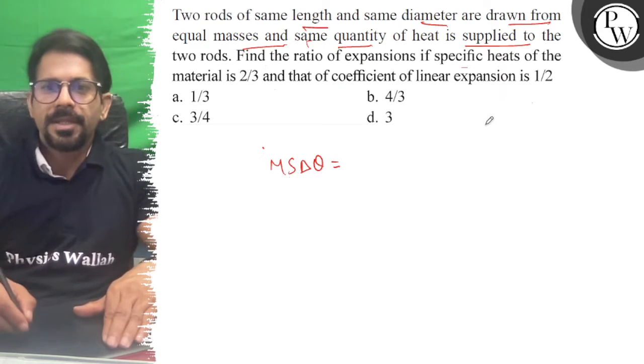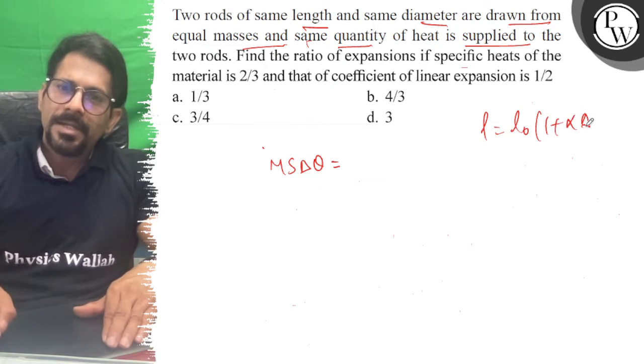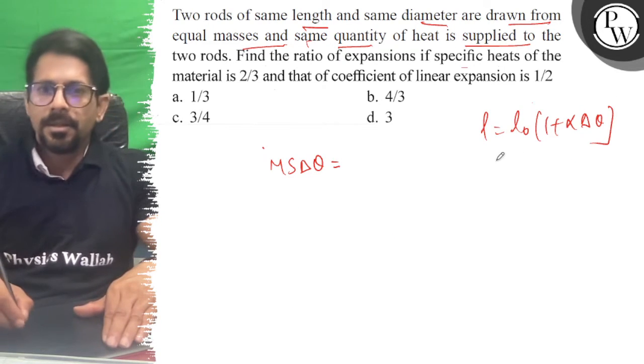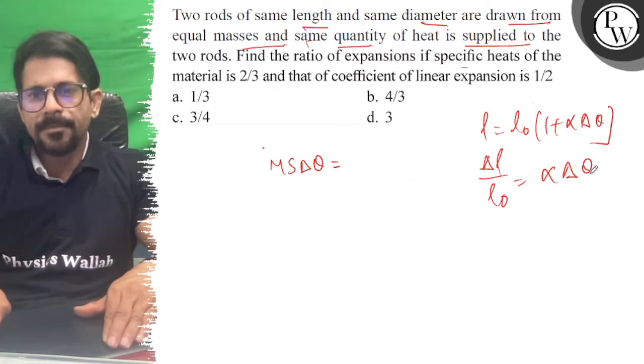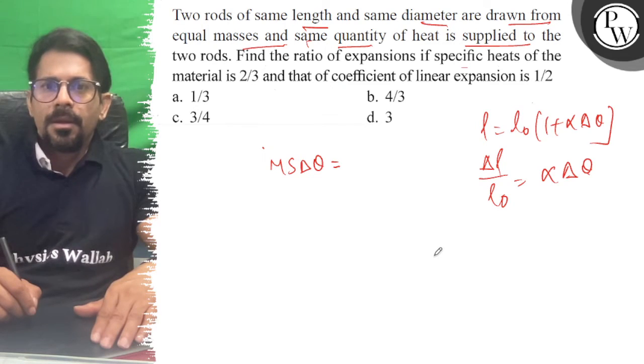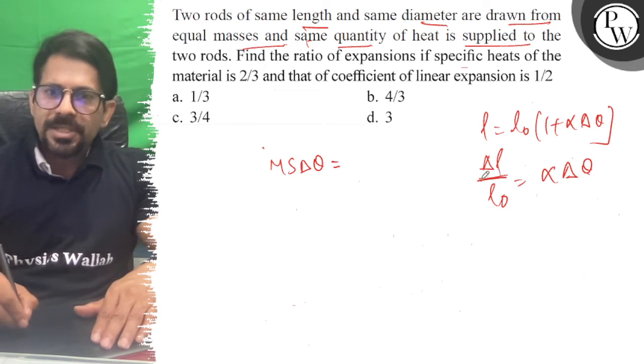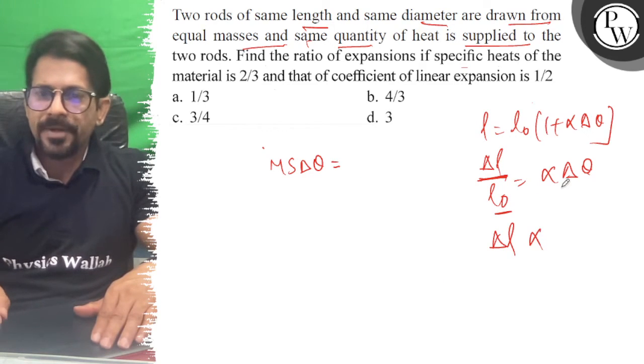If we look at this, l equals l0 times 1 plus alpha delta theta. So delta l by l0 equals alpha delta theta.